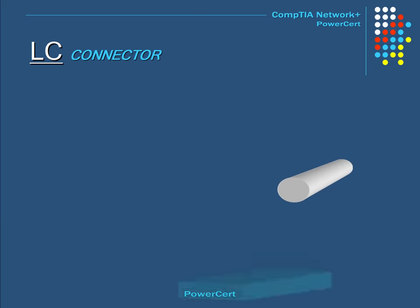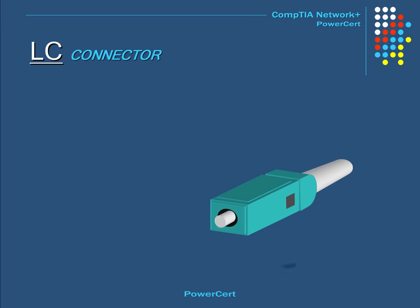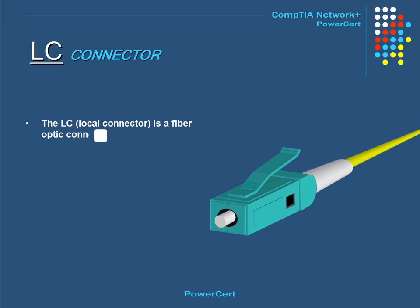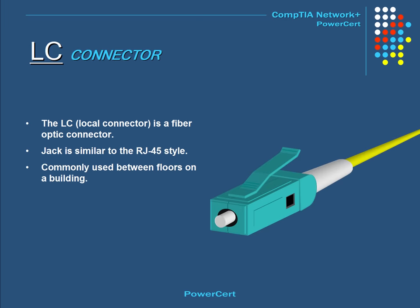The next connector is called the LC, or Local Connector. This is also a fiber optic connector. It uses a jack similar to the RJ45 and is commonly used between floors in a building.